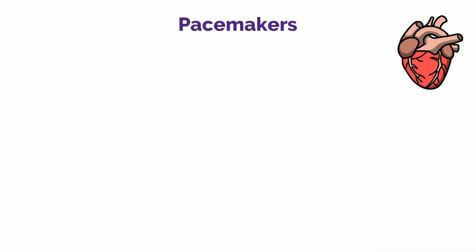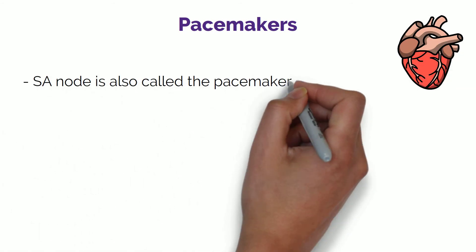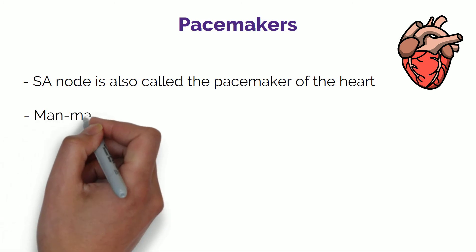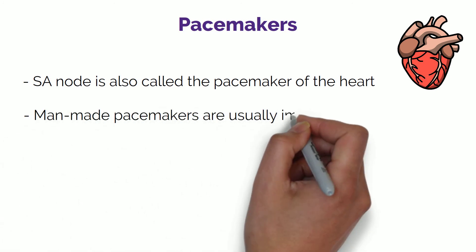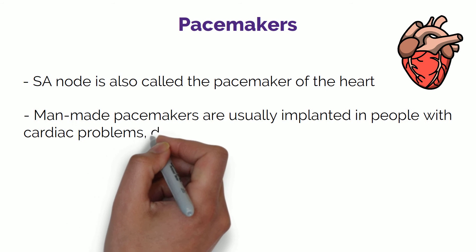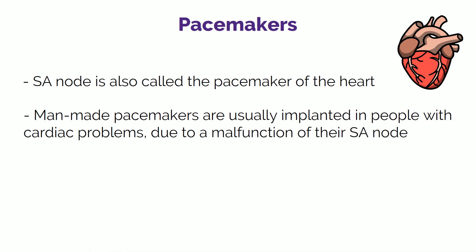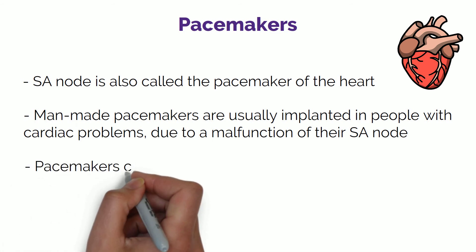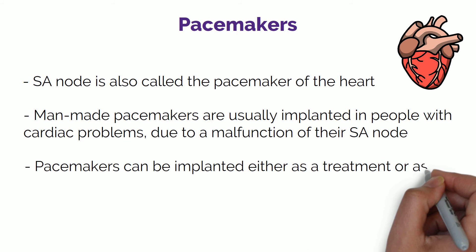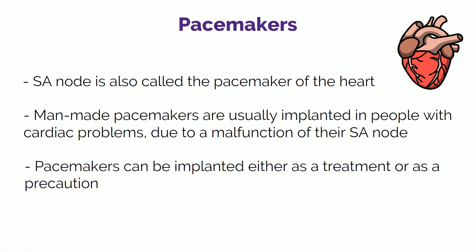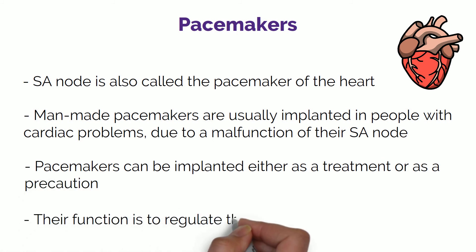The SA node is also called the pacemaker of the heart. This is why when you hear of an older person having heart problems, they usually have a pacemaker put in, because their SA node does not transmit the electrical impulse properly, so they need a man-made version to do it instead. These can be implanted for a number of reasons, either as a treatment or as a precaution. For example, if a person's heart rate becomes unstable — either too fast, too slow, or a mixture of the two — then a pacemaker can be implanted to regulate the heart's activity.